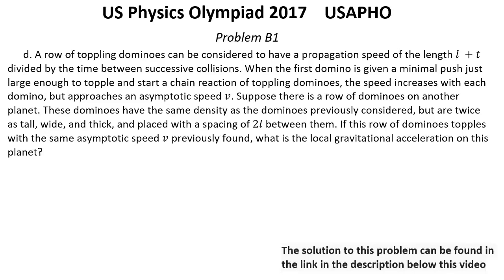Suppose there is a row of dominos on another planet. These dominos have the same density as the dominos previously considered, but are twice as tall, wide, and thick, and placed with the spacing of 2L between them. If this row of dominos topples with the same asymptotic speed V previously found, what is the local gravitational acceleration on this planet?